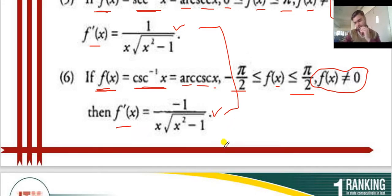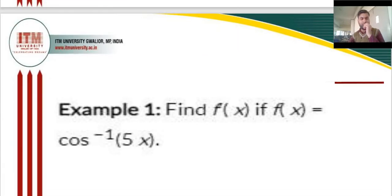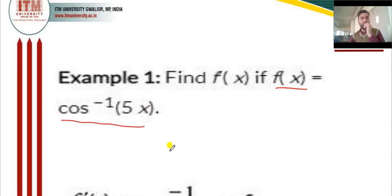All the formulas of differentiation of inverse trigonometric functions should now be clear. To attempt numerical problems of this section, you have to remember all these 6 formulas. Now we move to the numerical exercise. Suppose you are given f(x) equal to cos⁻¹(5x).